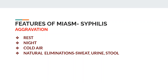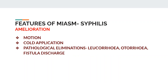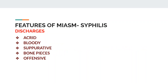Aggravations in syphilitic miasm are: aggravation by rest, aggravation during night, aggravation by cold air, and aggravation by natural eliminations — normal discharges like sweat, urine, and stool aggravate the condition. Amelioration is by motion, by cold application, and by pathological eliminations like glycosuria, otorrhea, fistula discharge, and ulcerative discharge — these discharges ameliorate.